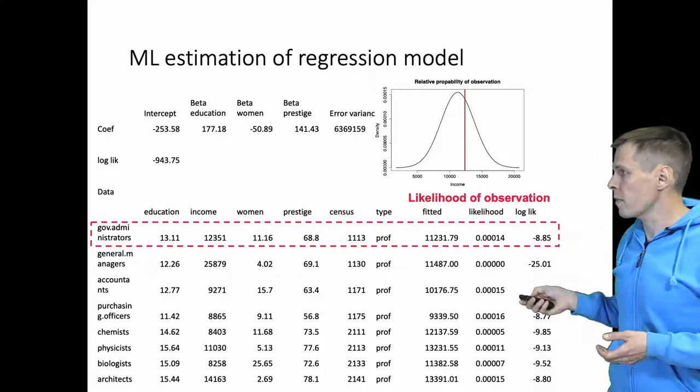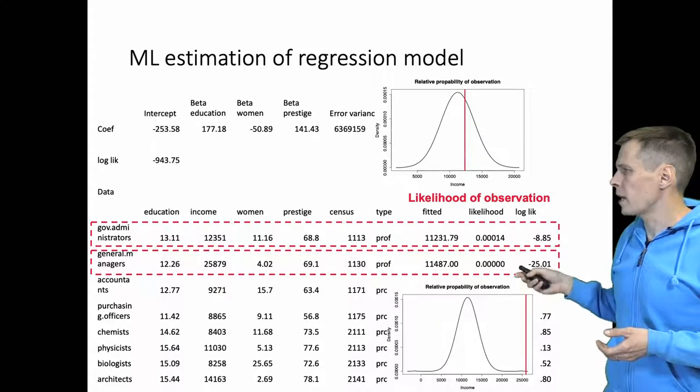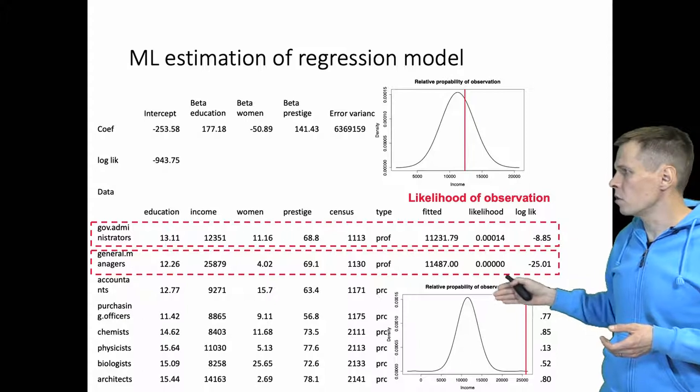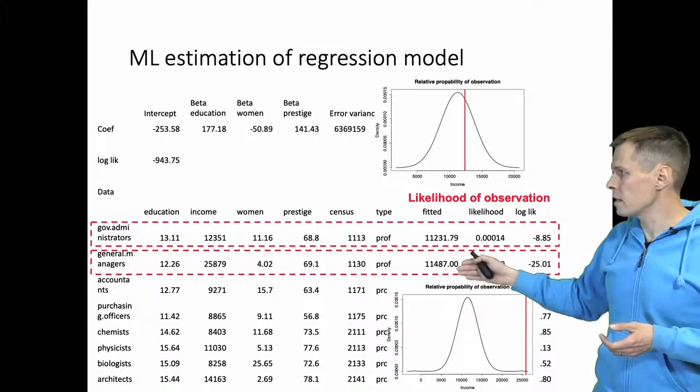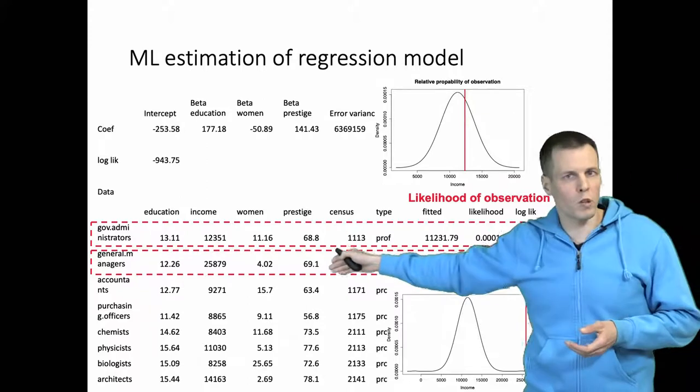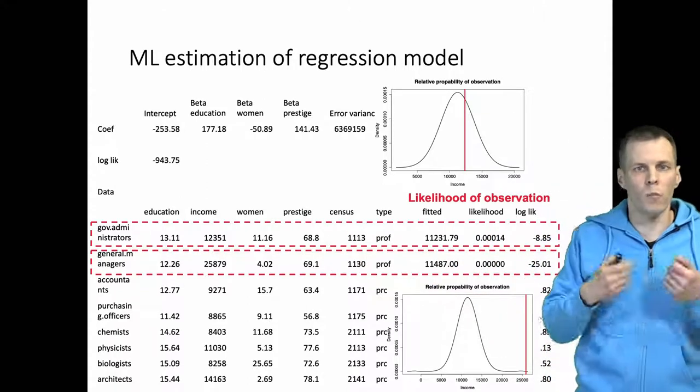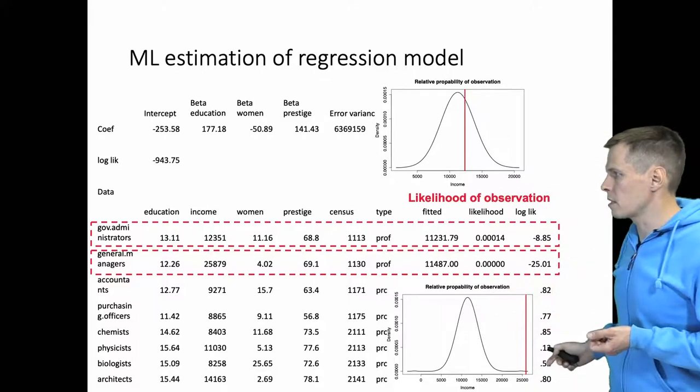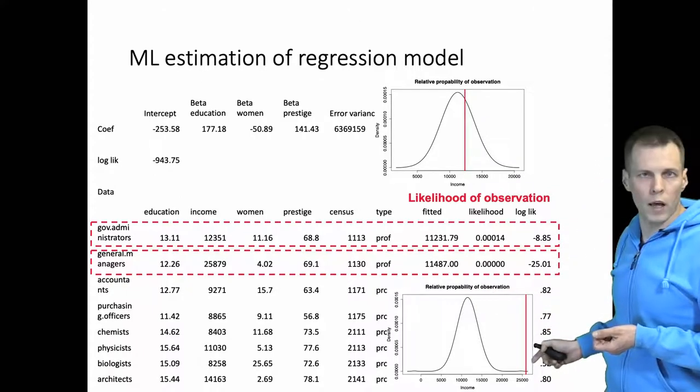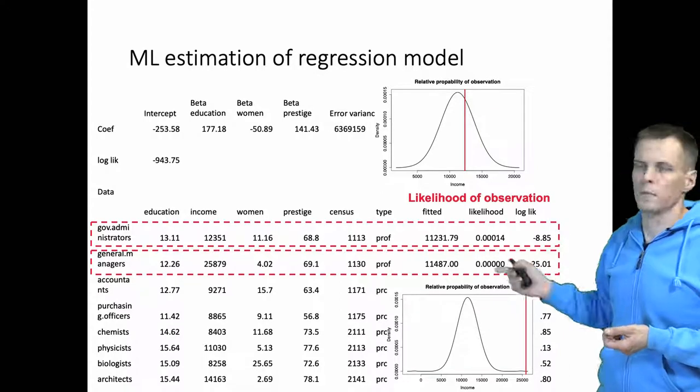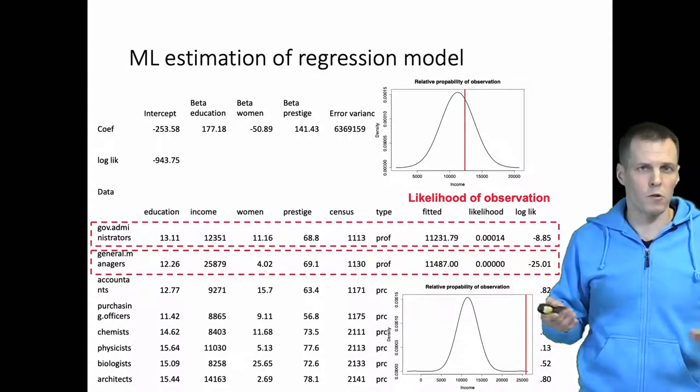So for general managers we have the probability—we plot the distribution. The mean is at 11,487. General managers earn more than 25,000, so they earn a lot more than what they should based on the model. Then we check, okay, so this is very small likelihood. In the log metric it's minus 25; in the raw metric it rounds to zero with our computers.